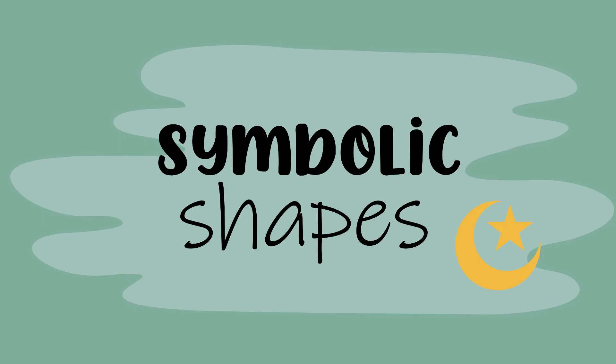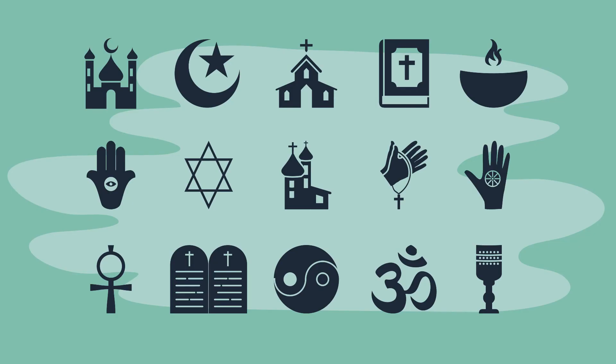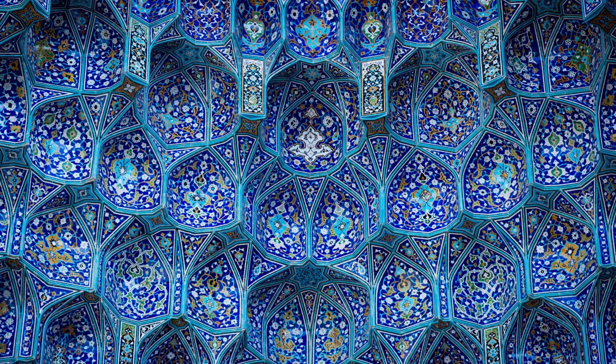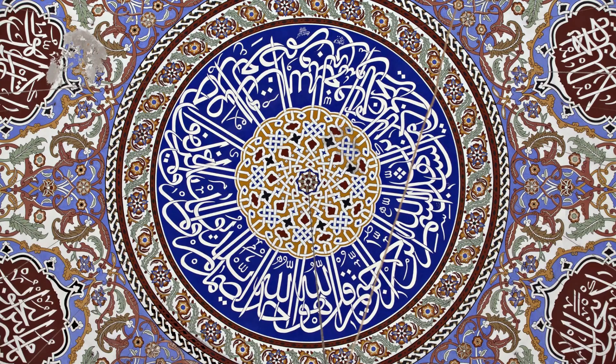Then we also get symbolic shapes. A symbol is an object or a sign that represents an identity, a belief or a concept. For example, the symbol of a cross can represent the Christian faith. Decorative shapes are shapes that predominantly make something look more attractive or ornamental. This includes a huge range of styles that cross historical, geographic and cultural borders, including Arabian, Turkish, Persian, Islamic, Indian, Chinese, Japanese and African designs.